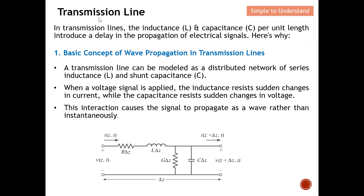Let's understand a bit more. In a transmission line, the inductors L and capacitors C per unit length introduce a delay in the propagation of the electrical signal. A transmission line can be modeled as a distributed network of series inductors and shunt capacitors. When a voltage signal is applied, the inductor will resist the sudden change in current — the key purpose of an inductor is to maintain current constant, and when there is a change in current it will try to resist that change.